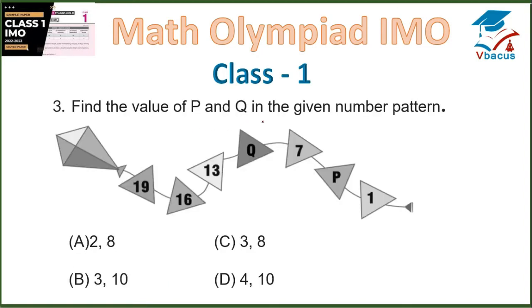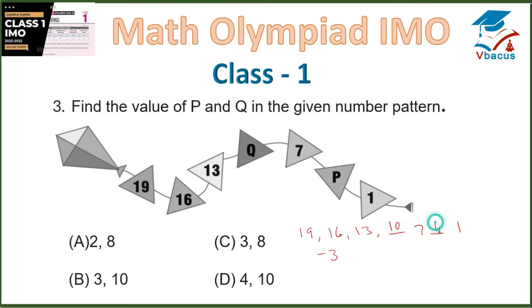Question 3: Find the value of P and Q in the given number pattern. The pattern is: 19, 16, 13, dash, 7, dash, 1. What will you subtract from 19 to get 16? We subtract 3. So: 19 minus 3 is 16, minus 3 is 13, minus 3 becomes 10. And 7 minus 3 becomes 4. So P is 10 and Q is 4, which we can see in option D. Your option D is correct.